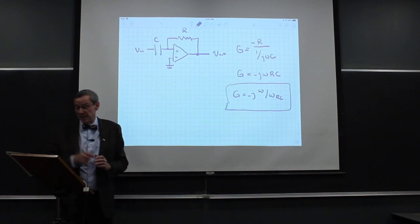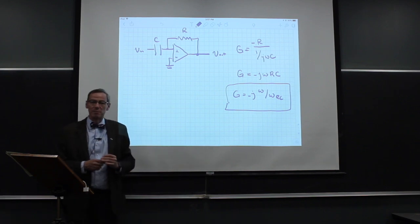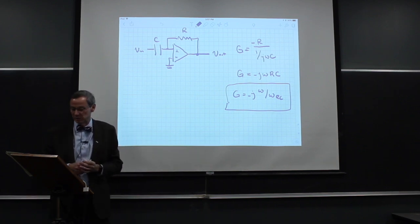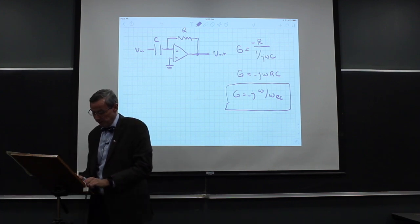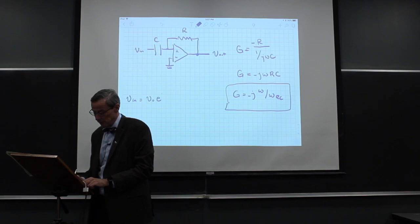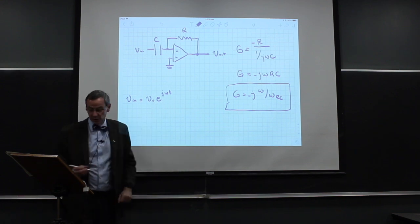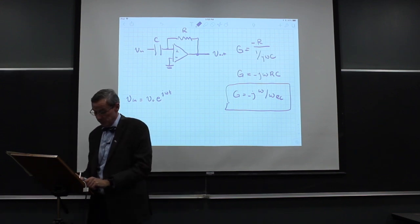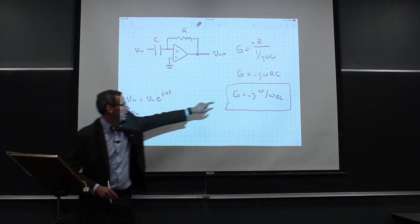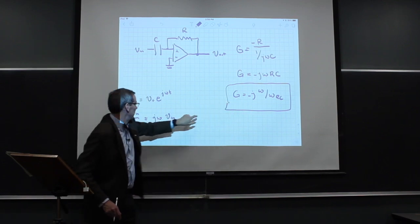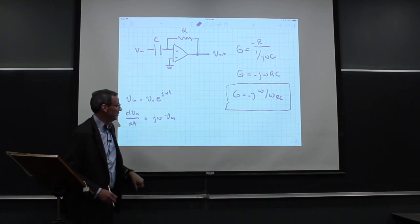And if we look at that, that may actually remind us of something we did when we had passive rather than active filters. And let me just remind you, if the input voltage is some V₀e^(jωt), so some arbitrary complex voltage, then dV_IN/dt is going to be jωV_IN. And we just bring down the jω from the voltage, so jω times V_IN.